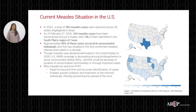Measles by real-time PCR offers rapid turnaround time and accurate identification of cases. This enables quicker isolation and treatment of infected individuals, thereby preventing the spread of the virus.